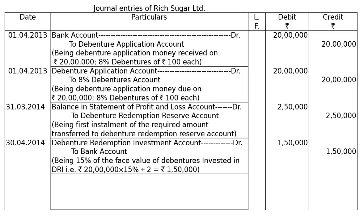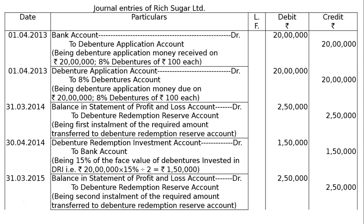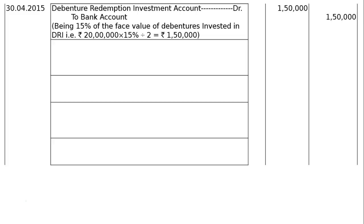These last two entries are repeated in 2015 because there are 2 installments. On 31st March 2015: Balance in Statement of P&L account debited to Debenture Redemption Reserve account — Rs 2,50,000 — being second installment of the required amount transferred to Debenture Redemption Reserve account. Next: Debenture Redemption Investment account debited to Bank account — Rs 1,50,000 — being 15% of face value of debentures (Rs 20,00,000 × 15% ÷ 2) invested in Debenture Redemption Investment account.